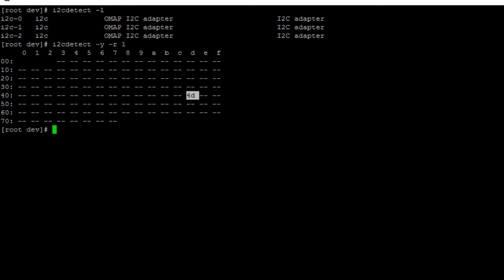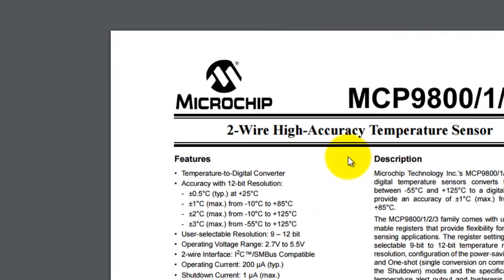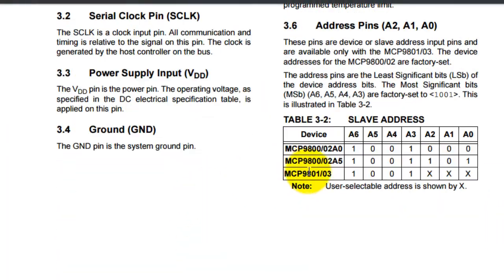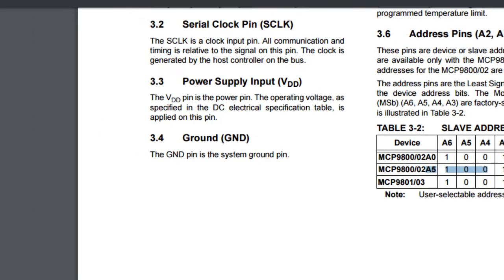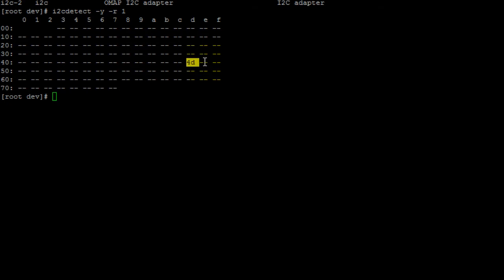To verify, let's open the datasheet of the I2C temperature sensor and scroll down to the slave address table. This table shows the address of multiple MCP980X devices. The device I chose ends with A5, so that row tells us the slave address of our device, which is 4D — consistent with the results we got in our terminal window. That's how you check to make sure your device is connected.